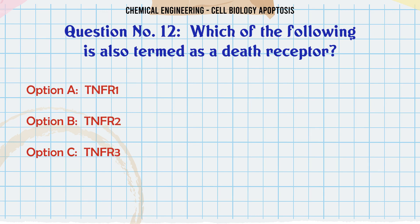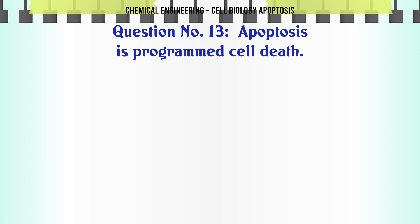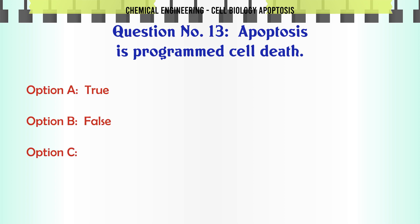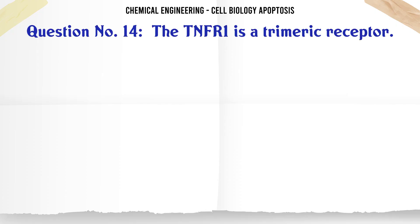Which of the following is also termed as a death receptor? A. TNF1, B. TNF2, C. TNF3, D. TNF4. The correct answer is TNF1. Apoptosis is programmed cell death: A. True, B. False. The correct answer is True.